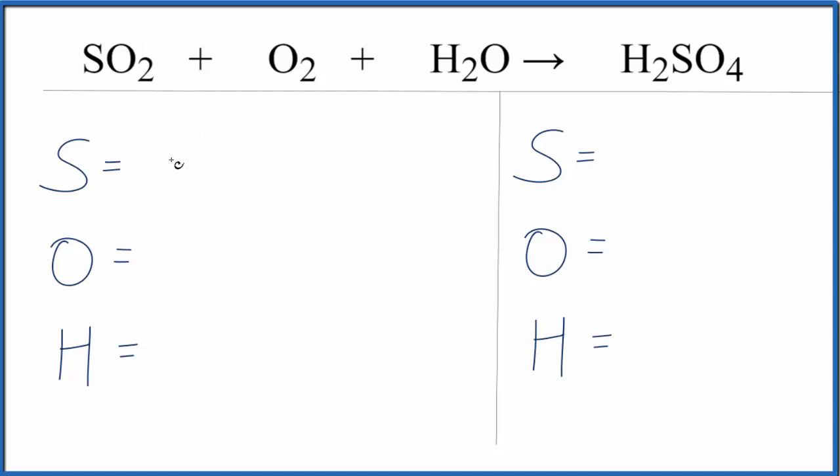Let's count the atoms up on each side of the equation. We have sulfur 1, oxygens we have 2, but then we have these 2, and then we have an oxygen in the water. So we have 5 oxygen atoms, we have 2 hydrogen atoms.